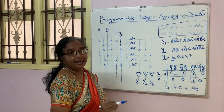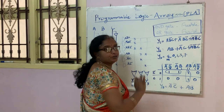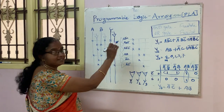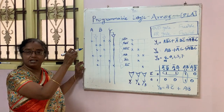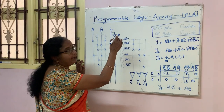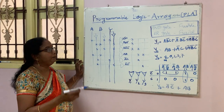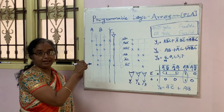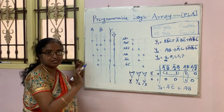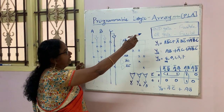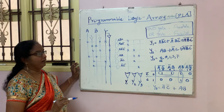In PLA, both the AND gate and OR gate are fusible — that is, both AND and OR gates are programmable. In the last class we saw about programmable array logic, that is PAL. The difference between PAL and PLA is that in PAL the AND gate alone is programmable and the OR gate is fixed, whereas in PLA both the AND gate and OR gate are programmable.